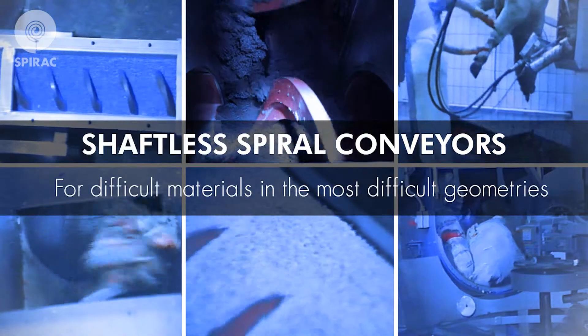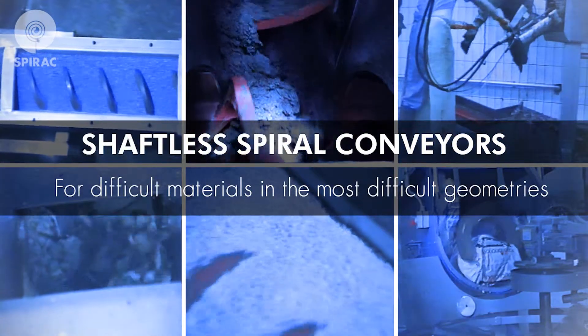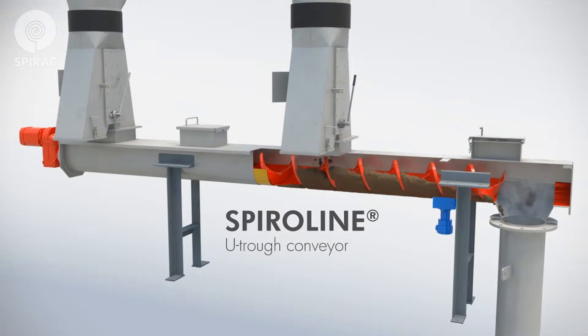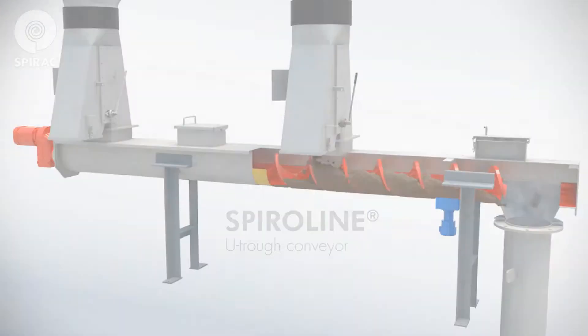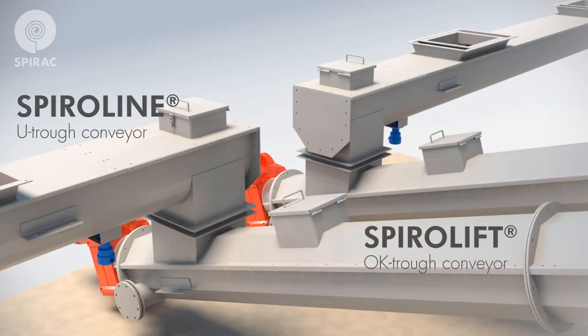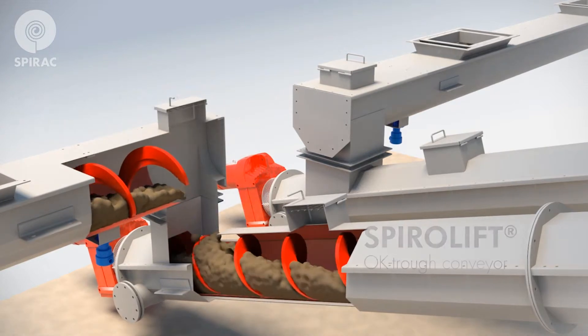SPIRAC shaftless conveyors are capable of conveying almost any kind of material horizontally, on an incline, or vertically.